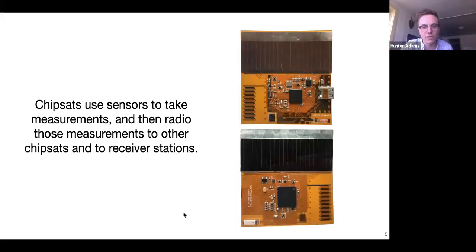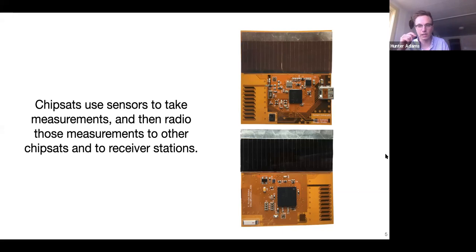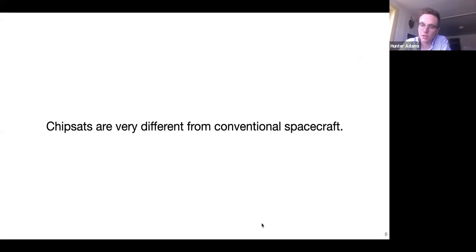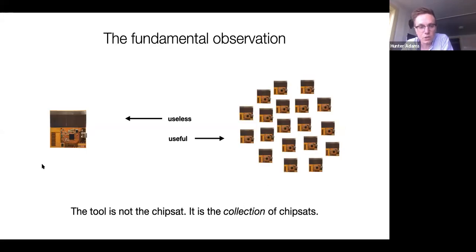So what are chipsets? They're very, very small satellites — satellites that would fit in your wallet. The notion is that they can be carried to space by the hundreds, thousands, or millions to be deployed as free-flying spacecraft. Once deployed, each uses a suite of onboard sensors to take environmental measurements, and then uses a radio to communicate those measurements to other chipsets in a network and back down to receiver stations. An individual chipset, however, is useless.